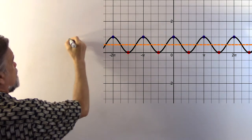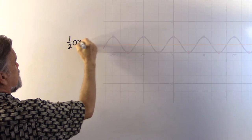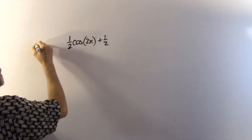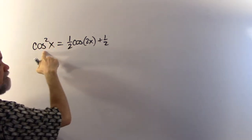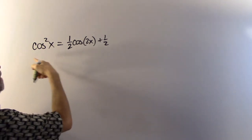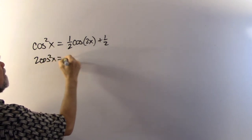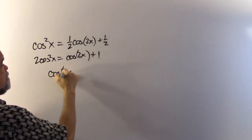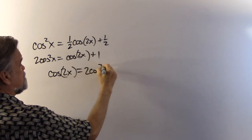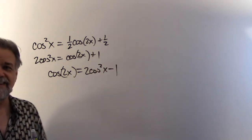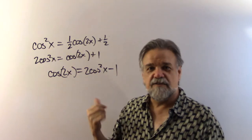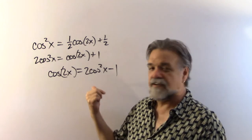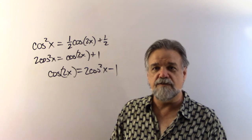So this is positive one half times cosine of 2x plus one half, and we got it by squaring the cosine. Multiply both sides by two: two cosine squared of x equals cosine(2x) plus one. Subtract one from both sides: cosine of 2x equals two cosine squared of x minus one. And that's another one of the double angle identities! So two out of the three identities for cosine of 2x can be figured out just by looking at the graphs of sine squared or cosine squared.